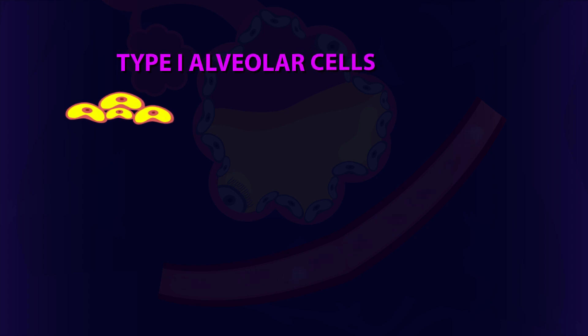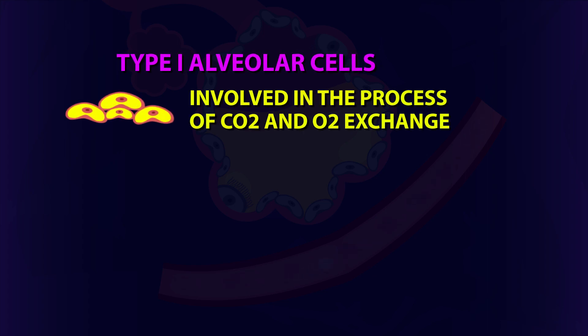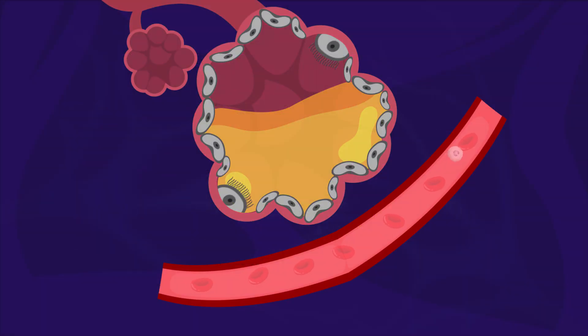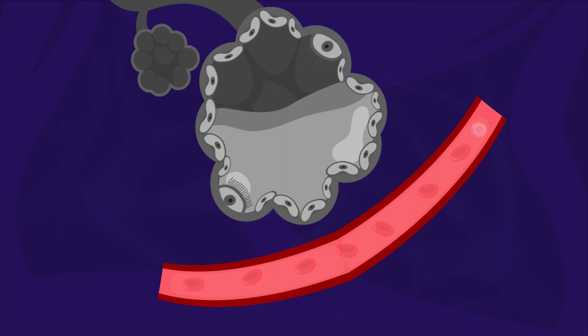Type 1 alveolar cells, which are involved in the process of gas exchange between the alveoli and the blood, are damaged. Type 2 alveolar cells, which are responsible for making the alveoli open, also get damaged. As a result, the alveoli will collapse, which will further contribute to the hypoxemia.